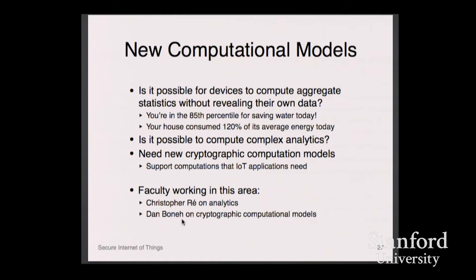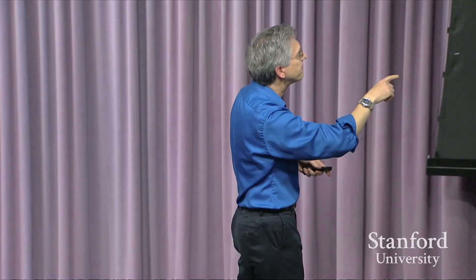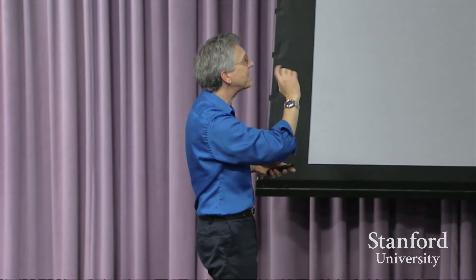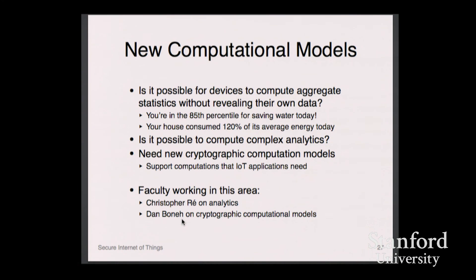It's pretty amazing. Now they proved you can do this in general. The problem is it's about a million to a billion times slower than doing it normally. But it turns out that for specific computations, there are ways of doing the encryption that if you only needed to do addition or linear operators, you can do this and it's not that much slower.